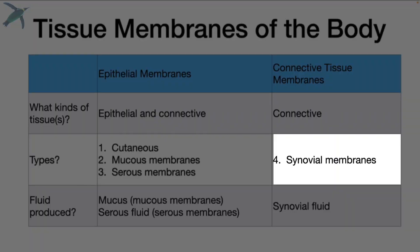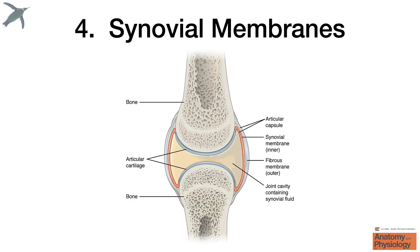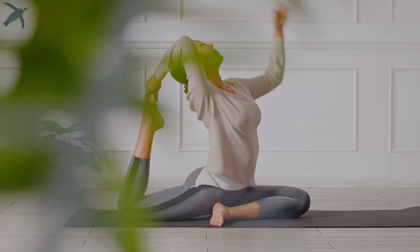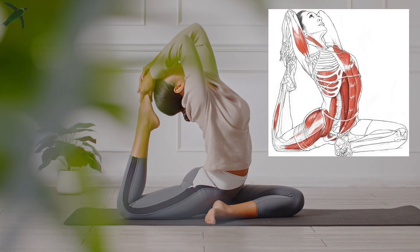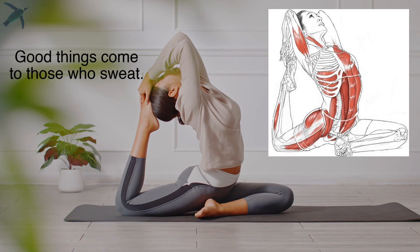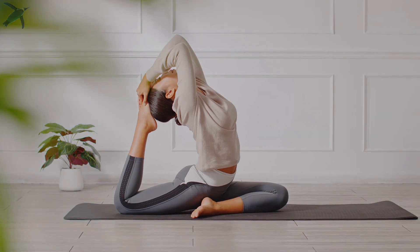Finally, we have synovial membranes. Synovial membranes refer to the membranes that line movable joint cavities. Synovia means thick fluid — it's kind of slimy. It provides lubrication, reduces friction, and also nourishes the cells in the articular cartilage because they do not have their own blood supply.